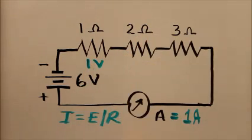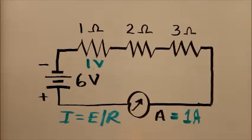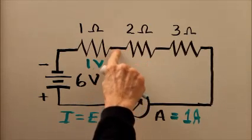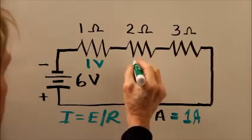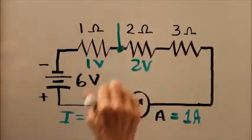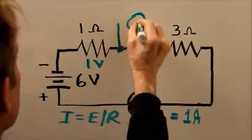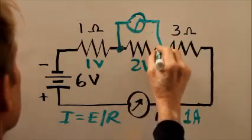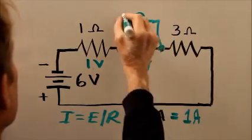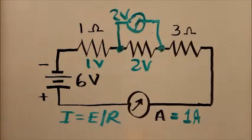For the 2 ohm resistor, again the current is 1 amp times 2 ohms, which gives us a voltage, according to Ohm's Law, across this resistor of 2 volts. So if we connect a voltmeter across there it's going to show 2 volts. If we move that voltmeter so it's only across the 1 ohm resistor, it'll show 1 volt.